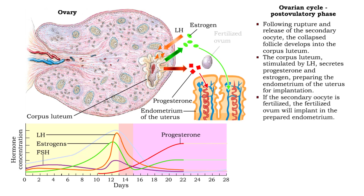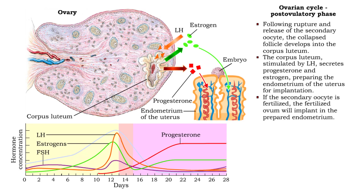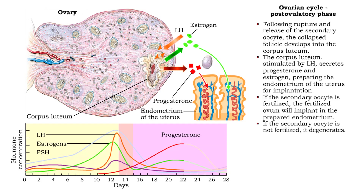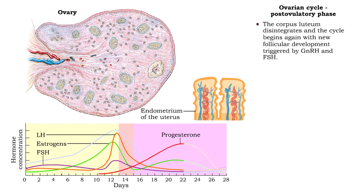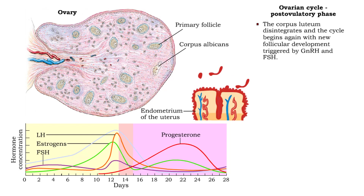If the secondary oocyte is fertilized, the resulting embryo will implant into the prepared endometrium. If the secondary oocyte is not fertilized, it degenerates. The corpus luteum disintegrates, and levels of ovarian hormones decrease.